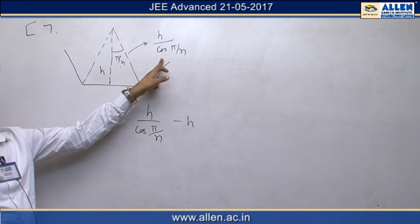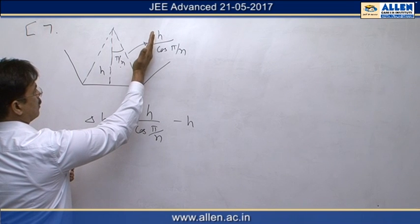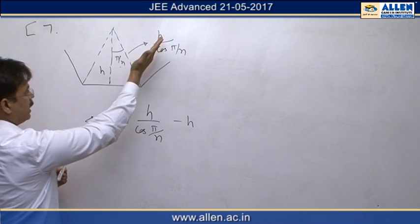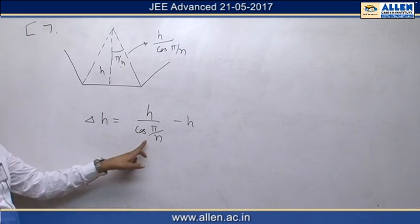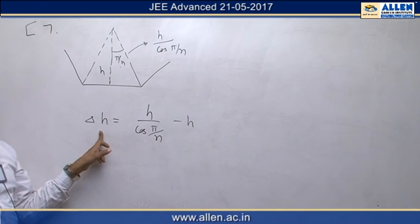So maximum rise in center of mass will occur when this arm becomes vertical, so change in height of center of mass will be final height minus initial height, so our answer is c.